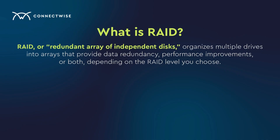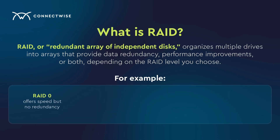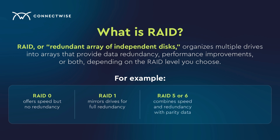RAID, or redundant array of independent disks, organizes multiple drives into arrays that provide data redundancy, performance improvements, or both, depending on the RAID level you choose. For example, RAID 0 offers speed but no redundancy. RAID 1 mirrors drives for full redundancy. RAID 5 or 6 combines speed and redundancy with parity data. RAID 10 gives you both but with higher hardware costs.